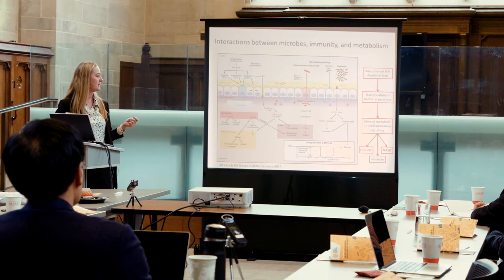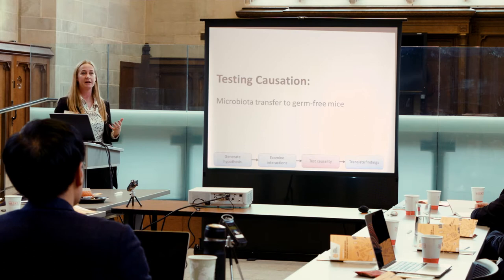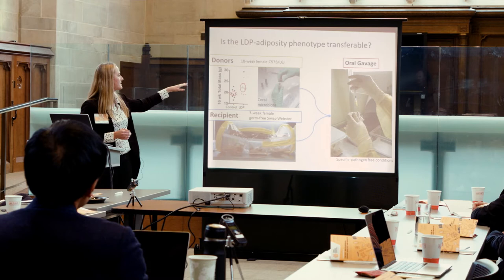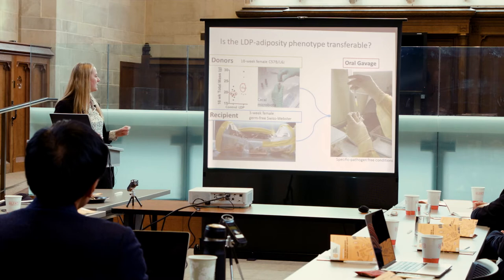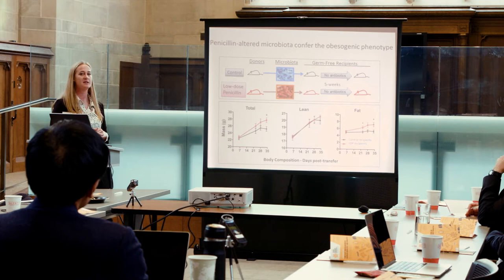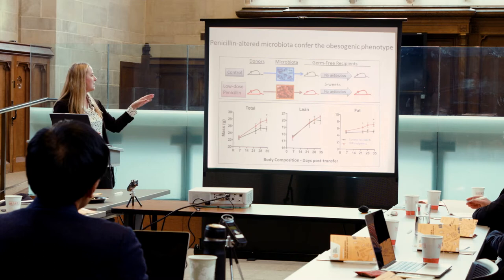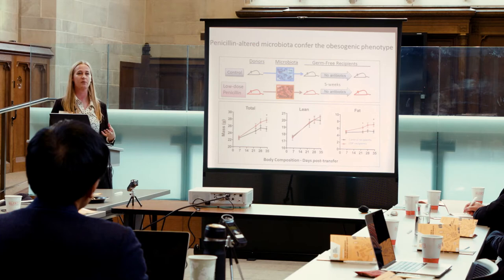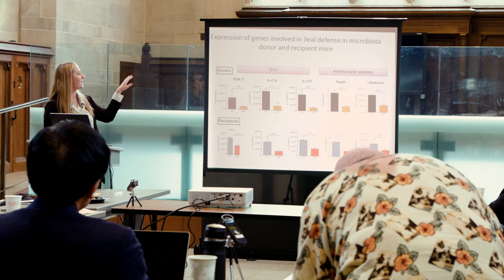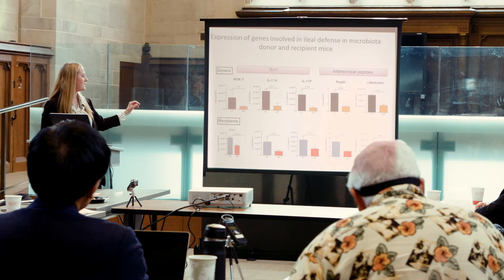All the studies so far relied on antibiotics, so we wanted to know: is it the antibiotics or is it the microbes? We performed a microbiota transplant, selecting three control donors and three penicillin donors based on median weight, and transferred microbes via oral gavage to germ-free mice. Within five weeks, mice that received the low-dose penicillin microbes had significant increases in fat mass, no changes in lean mass, and also significant increases in total weight, demonstrating that the altered microbiome was causing the changes in metabolism. Our microbiota donors had reduced Th17 cell markers and antimicrobial peptides, and the microbiota recipients showed similar trends, demonstrating transfer of both the gut immunologic and metabolic phenotype.